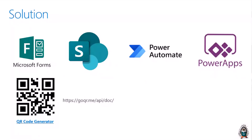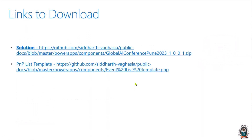The whole solution is developed using Microsoft Forms — a form we send for confirmation to attendees. We use SharePoint as the data source, Power Automate for automation of sending emails and processing, and Power Apps for the user interface to search for users and mark presence. For QR code generation, we use an open-source free QR code generator available via API. The solution is exported and available along with a PnP list template for the data schema.